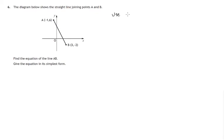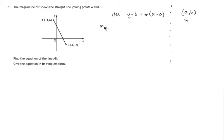We use the formula y minus b equals m times x minus a. When we do that, we know that point (a, b) is a point that lies on the line, and the value m is the gradient. So let's first work out the gradient of the line joining A to B — we use the y difference over the x difference.